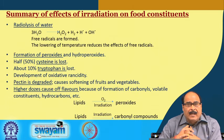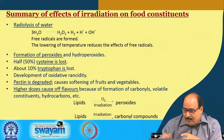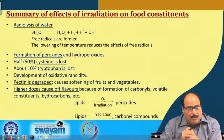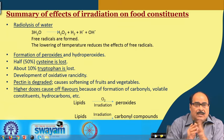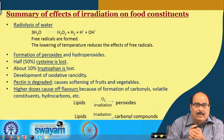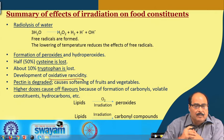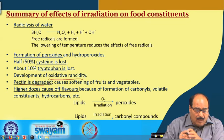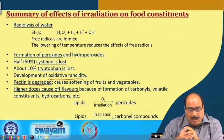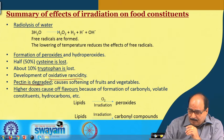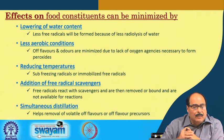To summarize the effects of irradiation on food constituents: water is radiolyzed; peroxides or hydroperoxides are formed; about 50% of cysteine may get destroyed; about 10% of tryptophan is lost; oxidative rancidity may develop; pectin is degraded causing softening of roots and vegetables; and higher doses can cause off flavor due to formation of carbonyl compounds, volatile constituents, and hydrocarbons.